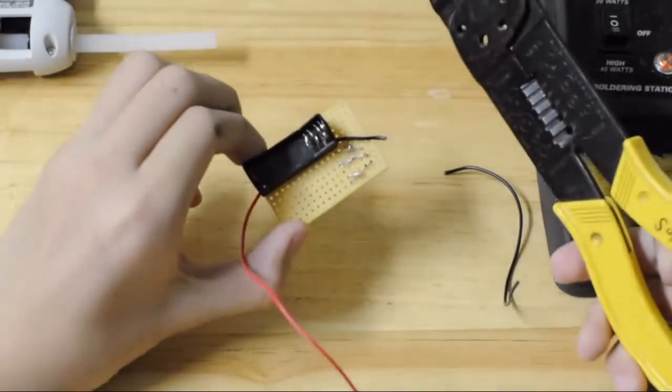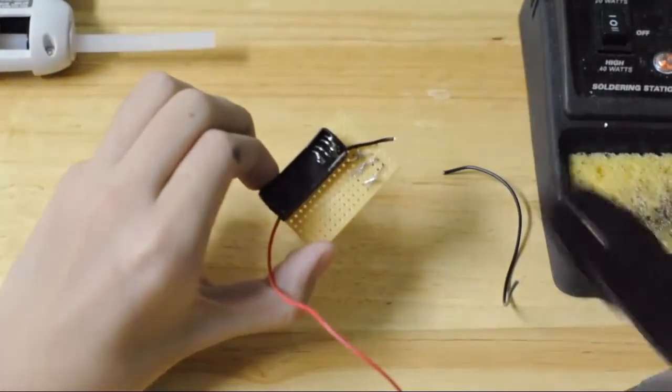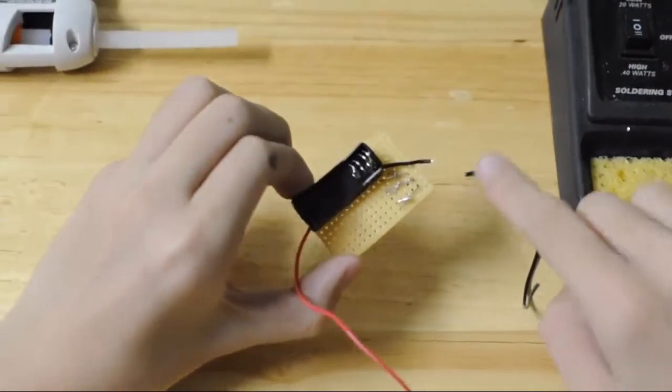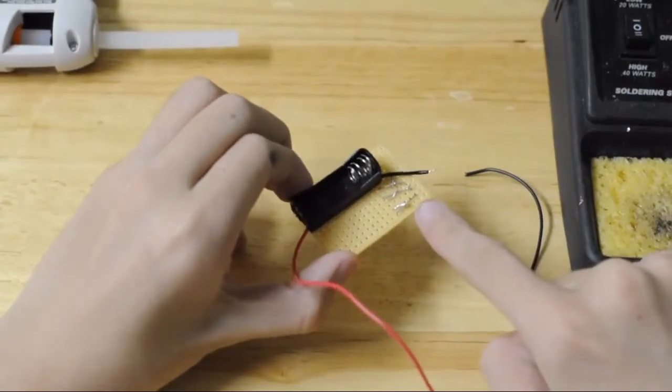After you've cut the wire, use a pair of wire strippers to strip the end of the wire so that you can solder the uninsulated part that you've just stripped to the transistor leg.